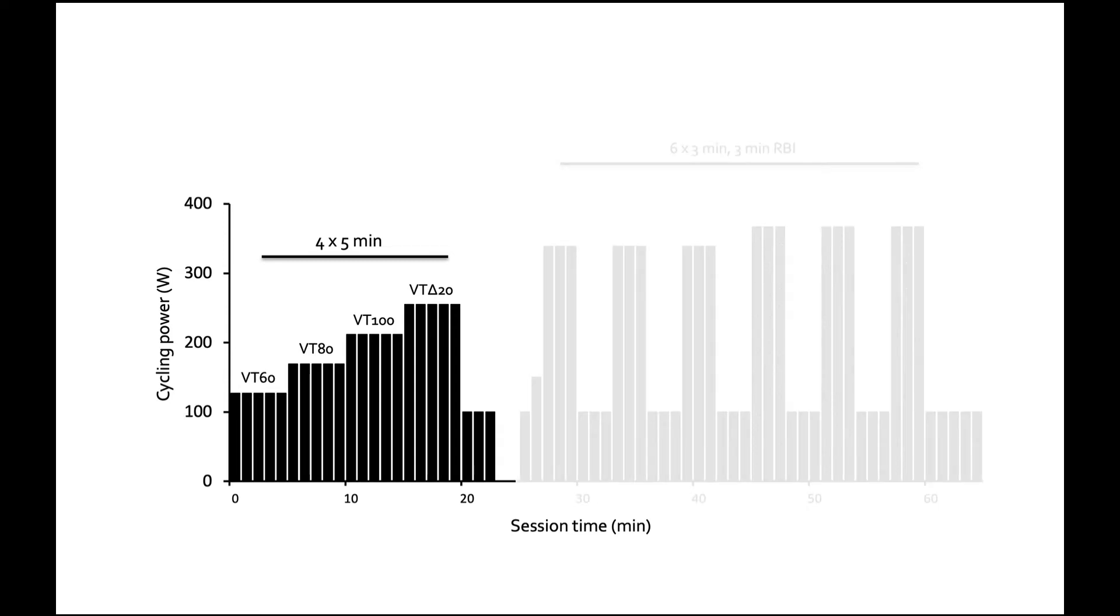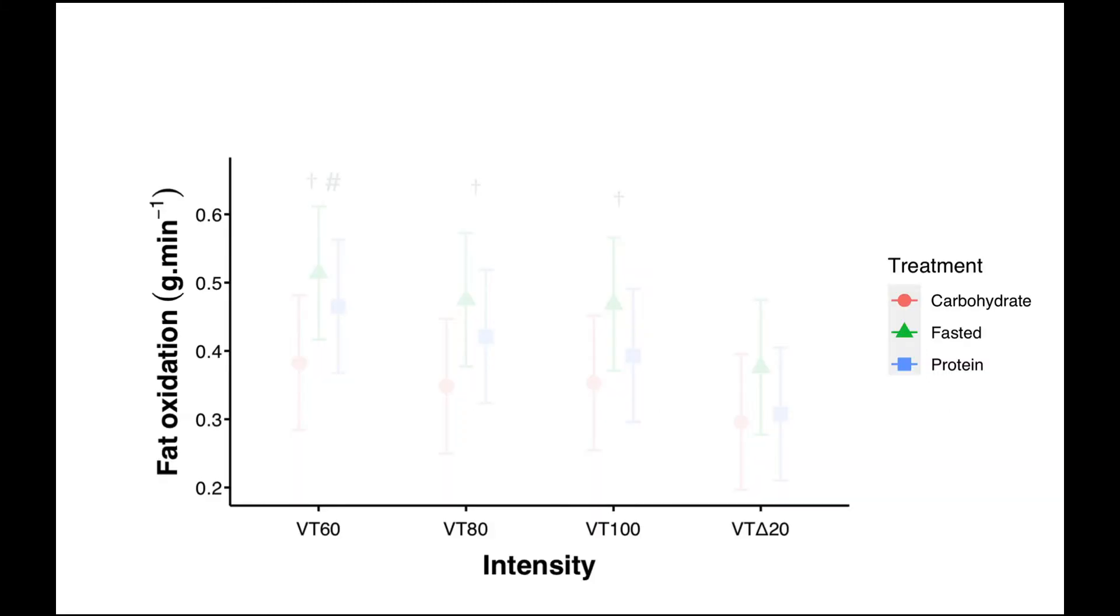Let's first focus on the submaximal portion of this workout and we measured fat oxidation. So again, remember we have three treatments and we have four different exercise intensities, and we can see here the fat oxidation in grams per minute. In this lowest intensity we see differences between the carbohydrate group which is in red and the fasted and protein groups which are in green and blue. There is no difference from a statistical standpoint between the fasted and protein, but they were both higher than the carbohydrate group.